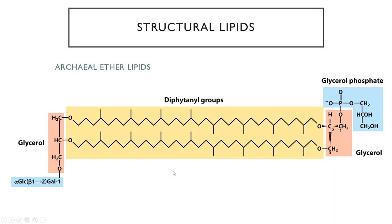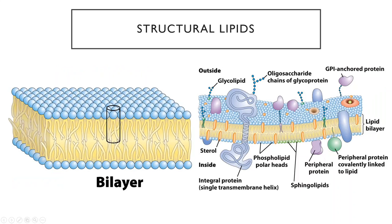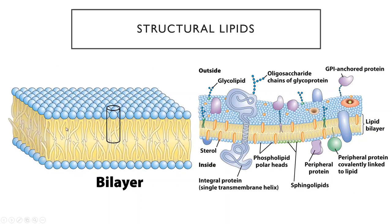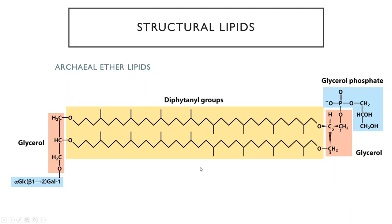Having polar groups at both ends means archaea can form a lipid monolayer. Bacteria and eukaryotes have cell membranes made of a lipid bilayer, but in archaea, because of these double-headed lipids, they can form a lipid monolayer — with amphipathic molecules extending from one side of the membrane to the other. It's just a different way of organizing the cell membrane.